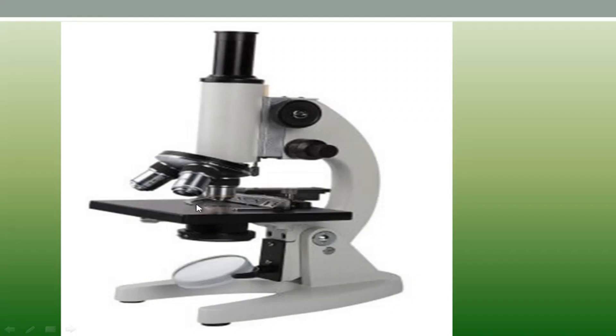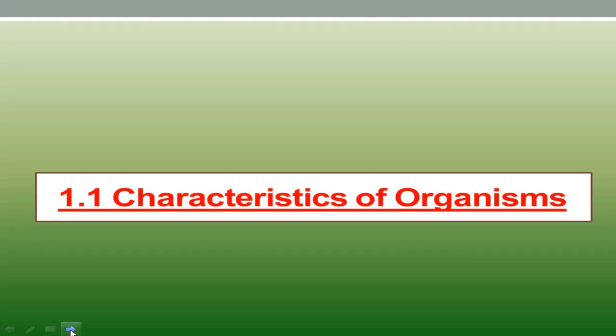This is the structure of the compound light microscope. You will be able to learn about its structure and how to use the compound light microscope in your practical work. Our next topic is the characteristics of organisms. Under this topic, you will learn how to differentiate living organisms from non-living things. I will explain this in my next video. Have a nice day.